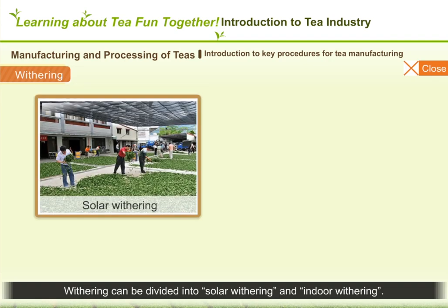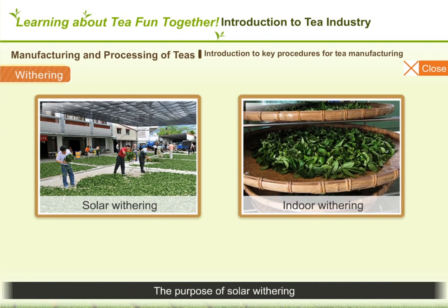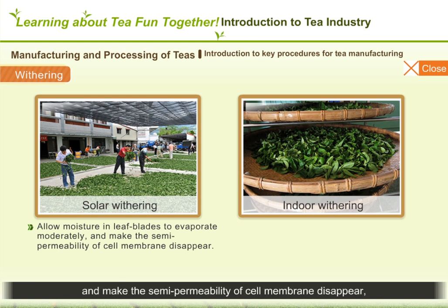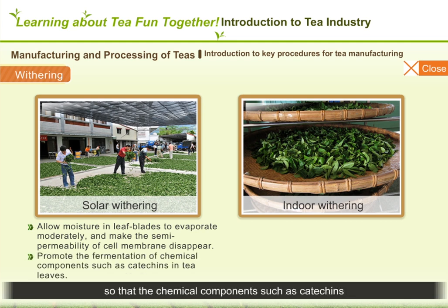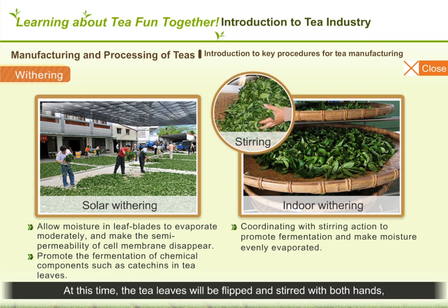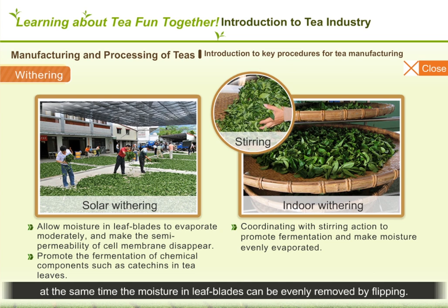Withering can be divided into solar withering and indoor withering. The purpose of solar withering is to allow the moisture in the blade of tea leaves to moderately evaporate by heat, reduce the water content in cells, and make the semi-permeability of the cell membrane disappear, so that chemical components such as catechins in tea leaves can be oxidized by the enzyme to carry out fermentation. After solar withering, partially fermented teas will be moved indoors for indoor withering, where tea leaves are flipped and stirred with both hands, breaking leaf blade cells by friction to promote fermentation and evenly remove moisture.